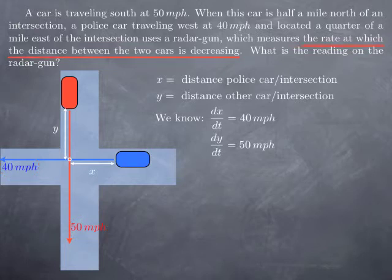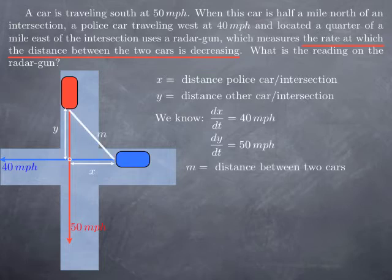Now, the radar gun measures the rate at which the distance between the two cars is changing. In other words, we need to introduce the distance between the two cars, let's call that m. And what we are looking for, the reading on the radar gun, is really the rate of change of this distance.